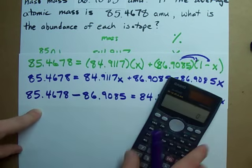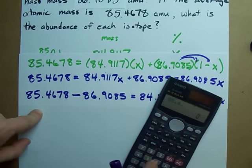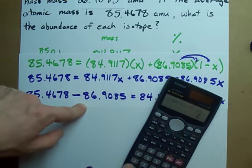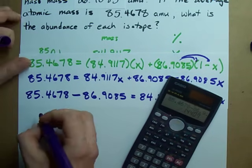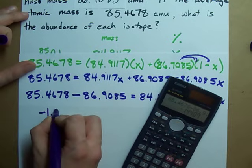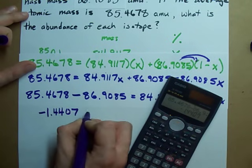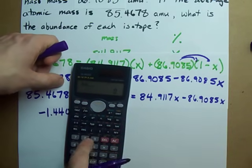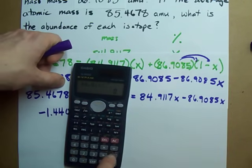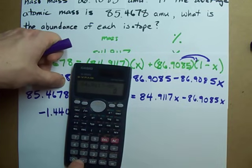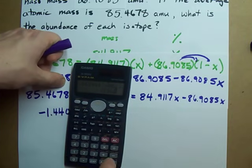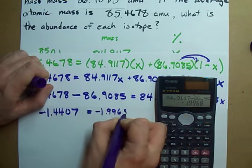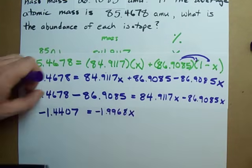84.9117 X minus 86.9085. You're going to need your calculator for this one. Now, 85.4678 minus 86.9085 turns out to be some weird number. Negative 1.4407.